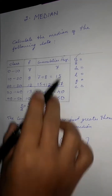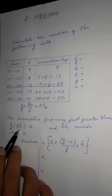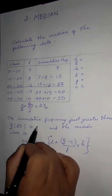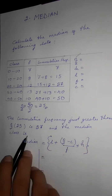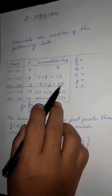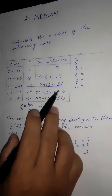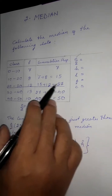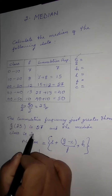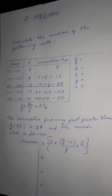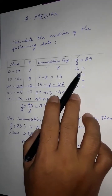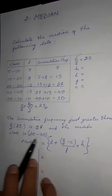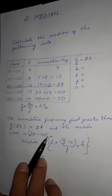The cumulative frequency just greater than 25 is 27, and the median class is in that zone. The cumulative frequency just greater than n by 2 is 27. The class interval is 20 to 30, and n by 2 is 25. H is the height of the class interval, and the median class is 20 to 30.